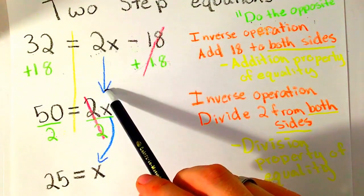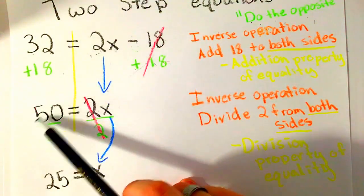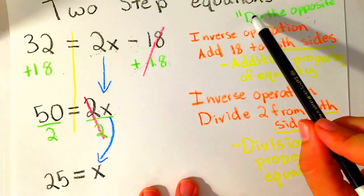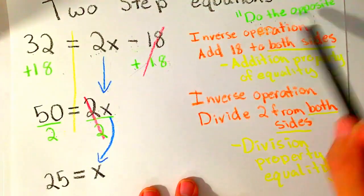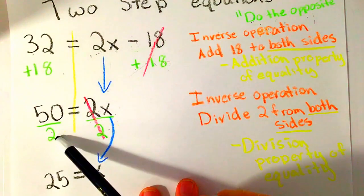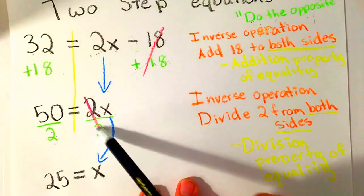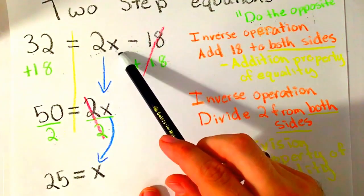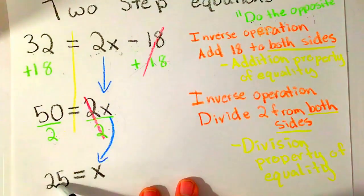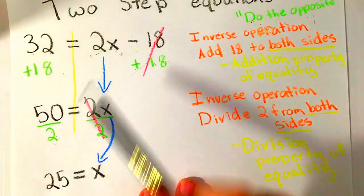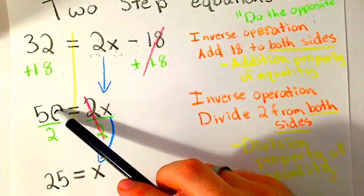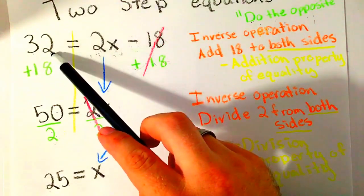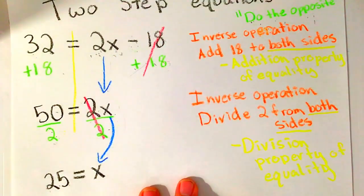Then I bring down what's left. I look for what's happening next and do the opposite. When I do the opposite to this side, I do it to this side as well. This side cancels and I'm left with x. The whole time I was trying to find the number for x, and now I've found it. 25 times 2 gives me 50, and if I subtract 18 from 50, I get 32. That is solving equations.